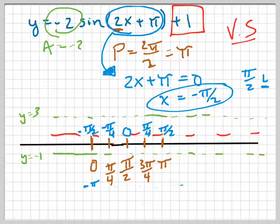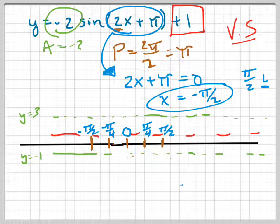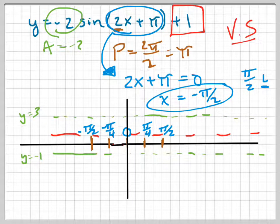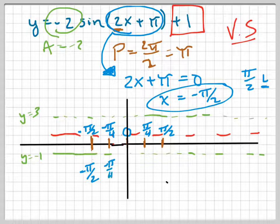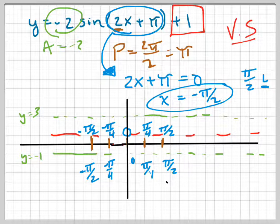Just erase your work or put it in parentheses — now I can draw in my y-axis. I'm going to rewrite these values down below so I can draw my graph more easily: negative pi over 4, 0, pi over 4, pi over 2. So I'll erase these things right here.